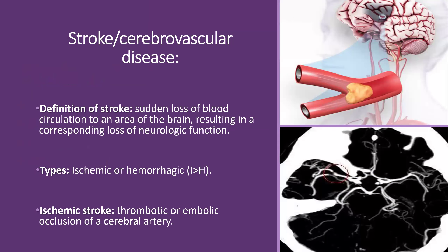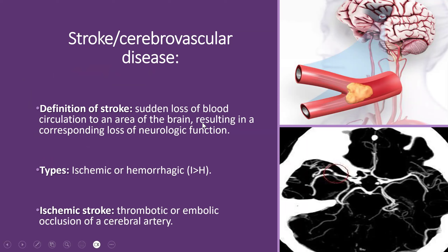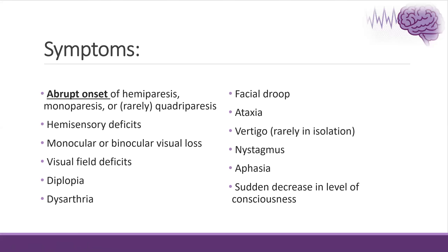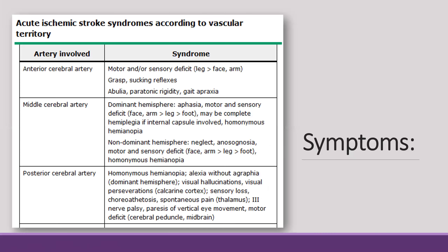Starting with stroke. Stroke is defined as sudden loss of blood circulation to an area of the brain, resulting in loss of the neurological function of the corresponding artery. It can be either ischemic or hemorrhagic stroke, and ischemic stroke can be either thrombotic or cardioembolic occlusion of the cerebral artery. The most important part in the presentation is an abrupt onset, meaning that symptoms reach their maximum within seconds to minutes, and it can present with motor, sensory, visual, or language manifestations according to the artery involved.